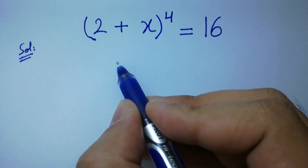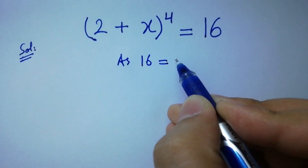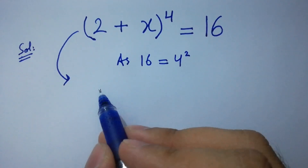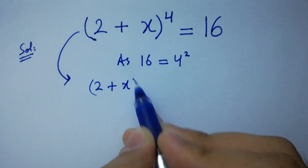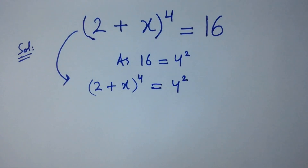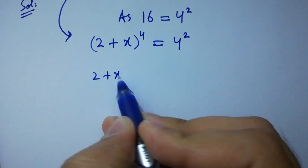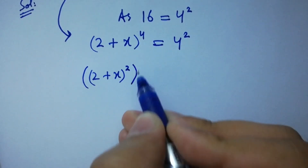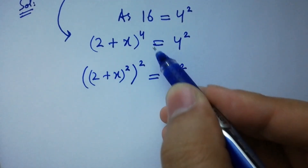As 16 equals 4 squared, then it will be (2 + x) to the whole power 4 equal to 4 squared, which is the same as (2 + x) to the power 2, to the whole power 2, equal to 4 squared, as 2 times 2 is 4.